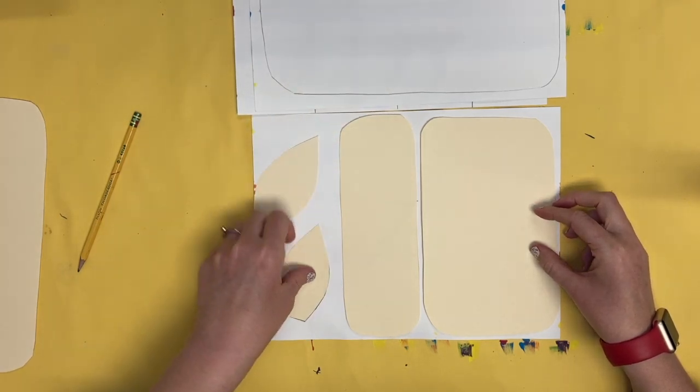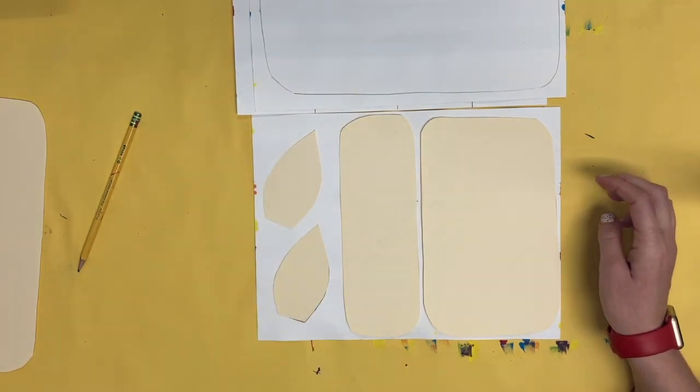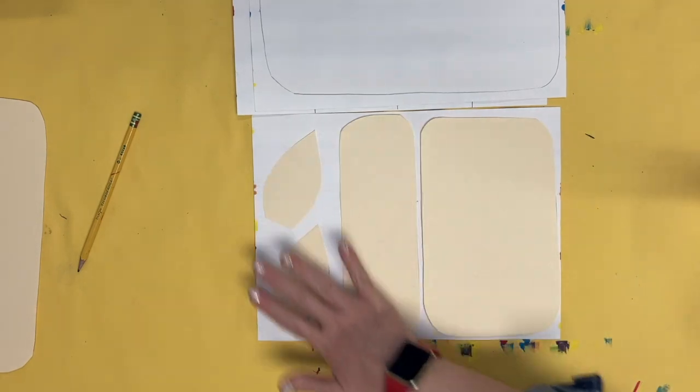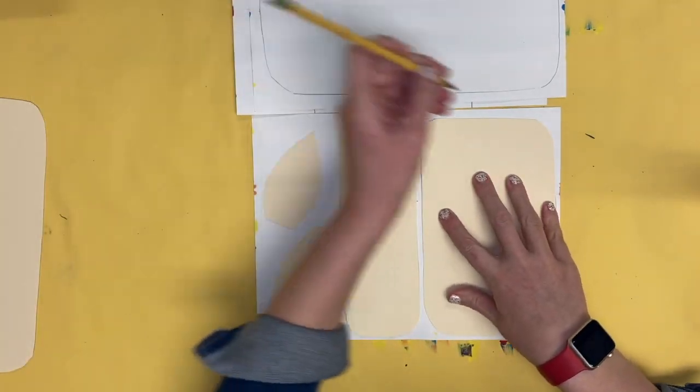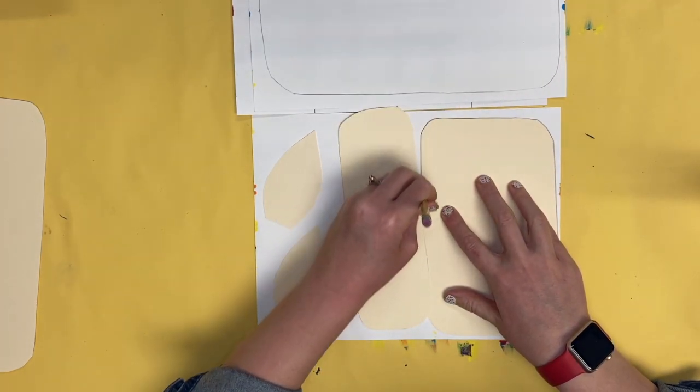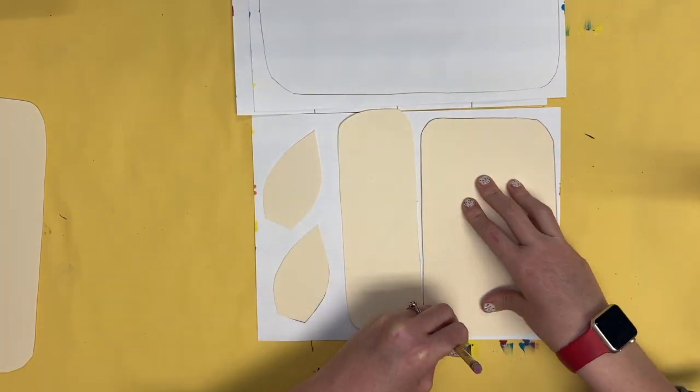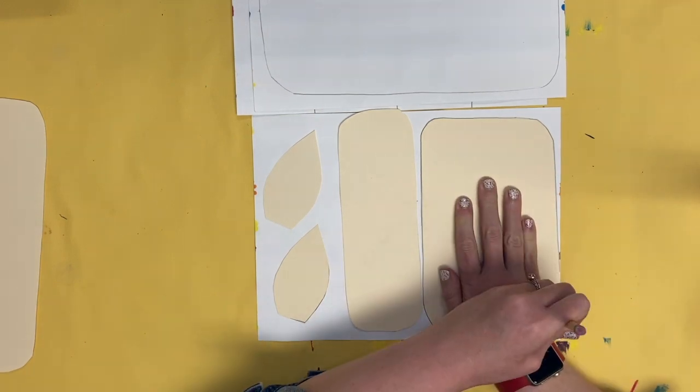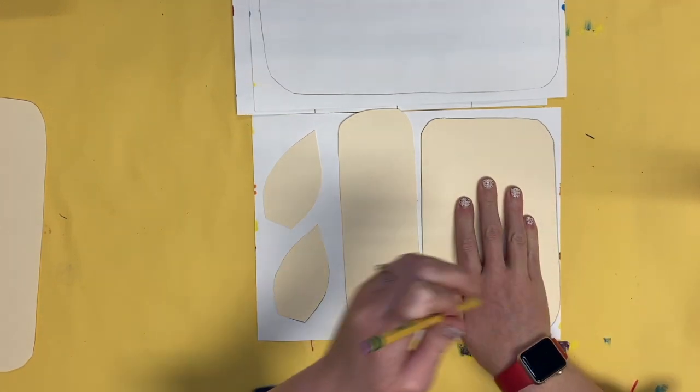Lay all the shapes down first before you start tracing so that way you know they all fit on your one piece of paper. Use that pencil to trace around the edges, making a copy of the shape onto your paper.